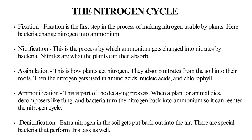The nitrogen cycle: fixation is the first step in making nitrogen usable by plants — here bacteria change nitrogen into ammonium. Nitrification is the process by which ammonium gets changed into nitrates by bacteria. Nitrates are what the plants can then absorb. Assimilation is how plants get nitrogen — they absorb nitrates from the soil into their roots, then the nitrogen gets used in amino acids, nucleic acids, and chlorophyll.